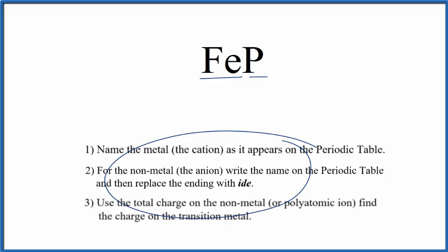So we're going to use these rules to write the name for FeP. First we write the name for the metal as it appears on the periodic table. Fe, that's iron.